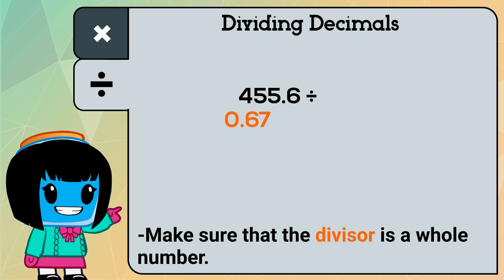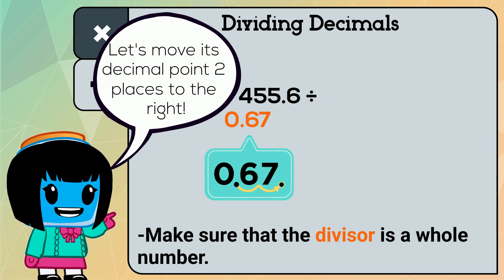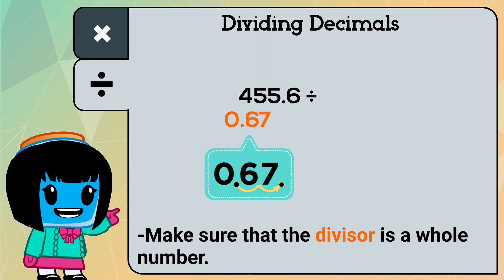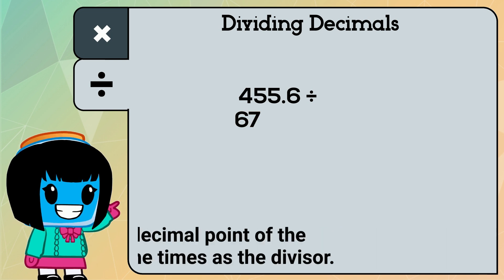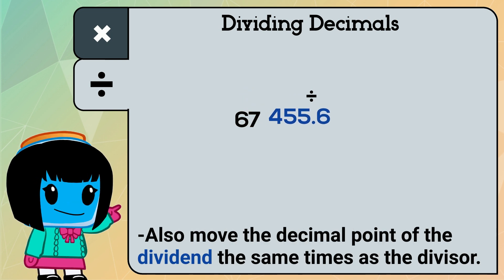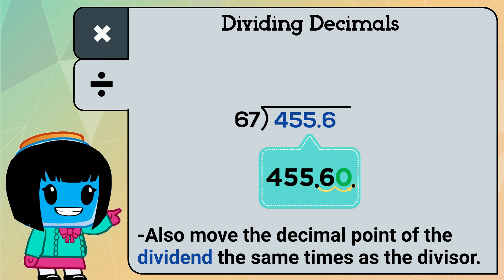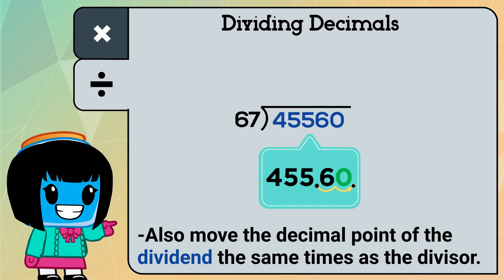To make that a whole number, we would have to move the decimal point two places to the right, making the divisor 67. This means we also need to move the decimal point in the dividend two places to the right as well, making it 45,560.